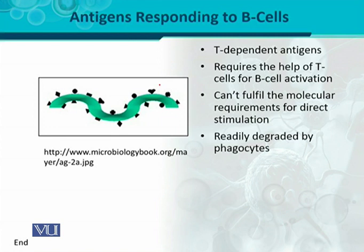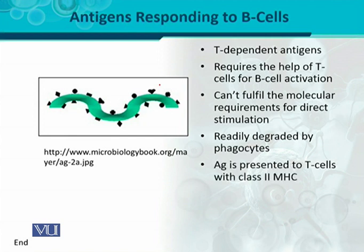By nature, T-dependent antigens can be easily degraded by phagocytes through phagocytosis, more easily compared to T-independent antigens. Because of this, after degradation by phagocytic cells or B cells, they are presented on the surface and T cells are engaged with their help — B cells are then activated for antibody production. The antigen is presented to T cells with class 2 MHC. After processing and degradation in the phagocytic cell, presentation occurs in association with class 2 MHC, which engages T-helper cells, leading to activation of B cells, which then proliferate and differentiate into plasma cells.